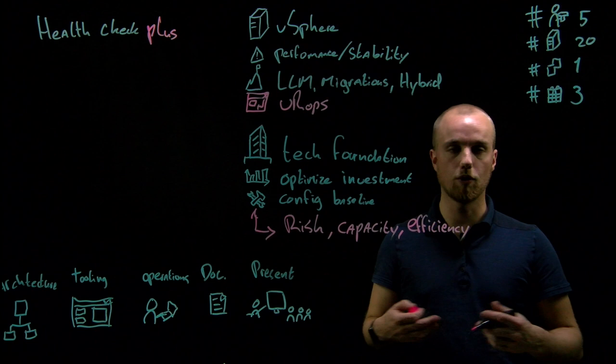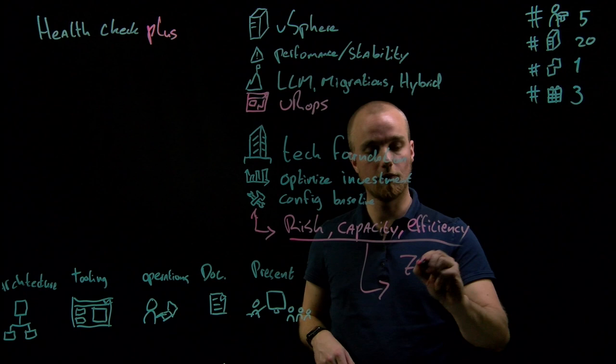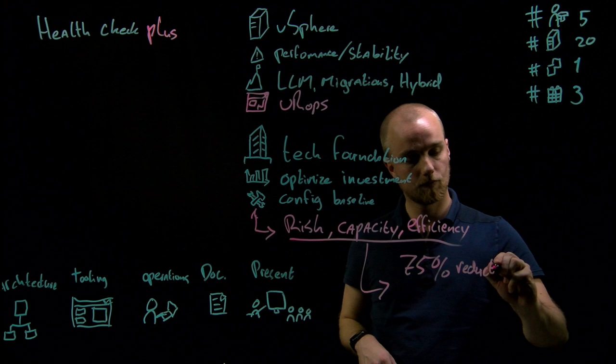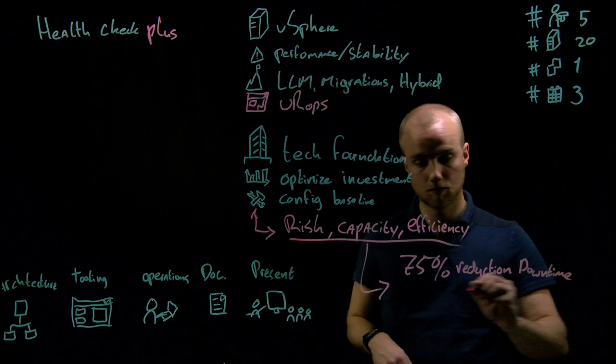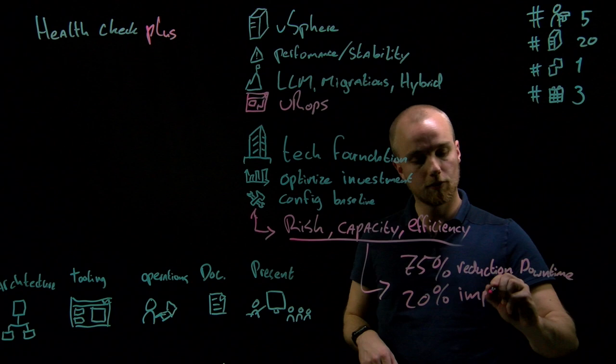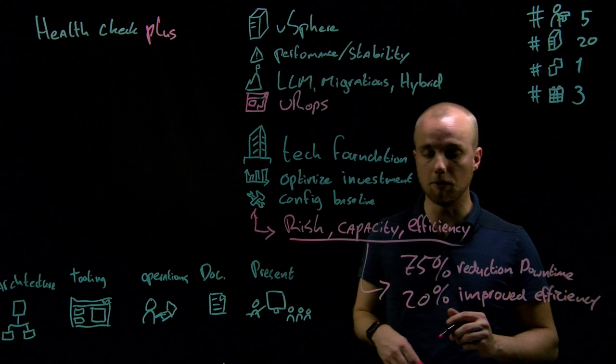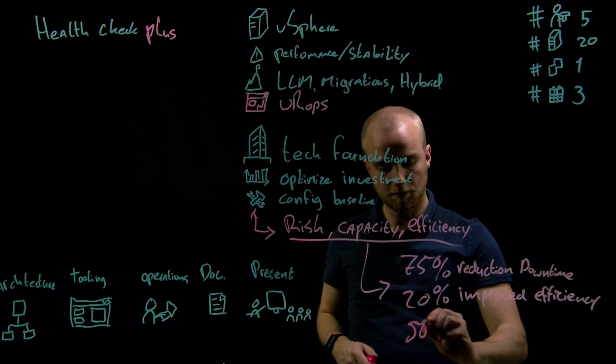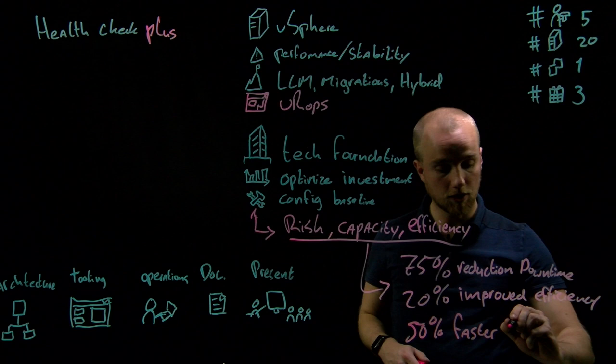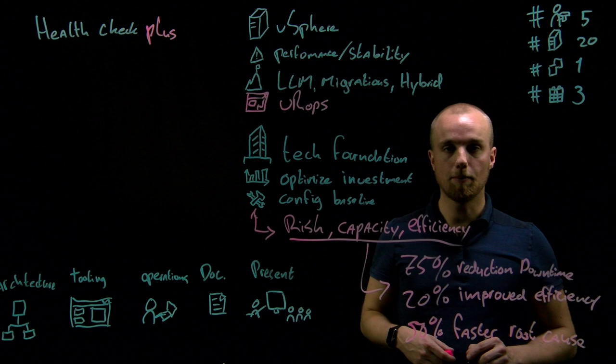People who use vRealize Operations within their VMware environment have a 75% reduction of downtime, a 20% improved efficiency in their organization by reclaiming resources within their platform, and have a 50% faster time to root cause if something happens within their environment.